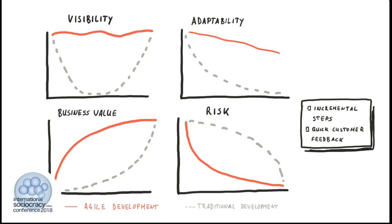To understand agile, maybe it's good to have a look at these four areas pictured on the slide. The first one is visibility. In agile you have the aim to always have a running version of your software product, so you always have visibility at a high level. In contrast, with traditional software development you usually get a running product after two or three years. In agile development, you do incremental steps which increases the adaptability of your software. From the beginning you are doing these little steps and are more likely to adjust your software, which also comes from the deep contact you have with the customer.